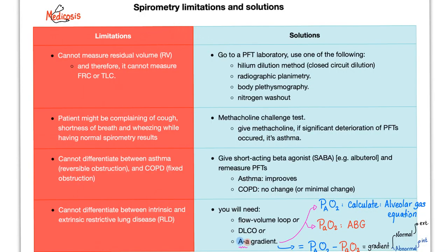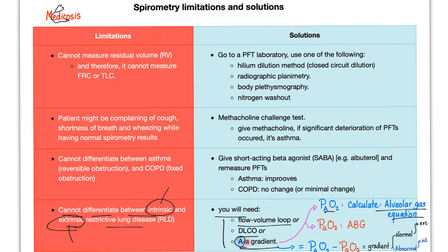Let me remind you from the previous video on pulmonary function tests. One of the limitations of spirometry is that it cannot differentiate between intrinsic and extrinsic restrictive lung disease — intrinsic such as pulmonary fibrosis, extrinsic such as chest wall disease. The solution: use the flow volume loop, the DLCO, or the AA gradient. You get the big A from the alveolar gas equation and the small a from the ABG. If the gradient is normal, the lung is normal. If the gradient is widened, it's an intrinsic or parenchymal restrictive lung disease.